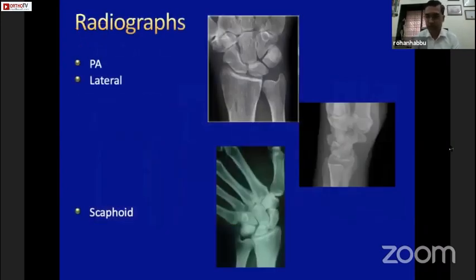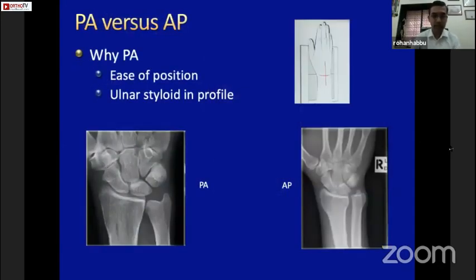Whenever we see a distal radius fracture or an injury to the wrist, the two commonest radiographs we should take are the PA and the lateral view, and if you're suspecting a scaphoid injury, go ahead and take a scaphoid view. There is always a confusion between whether to take a PA or an AP view.